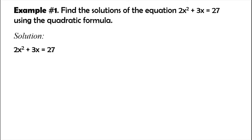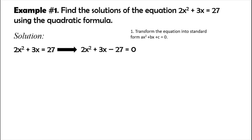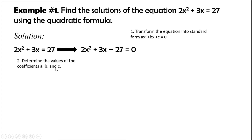Since example 1 is not yet in standard form, we transform it first. We transpose 27 to the left side of the equation, giving us 2x squared plus 3x minus 27 equals 0. Next step: determine the values of the coefficients a, b, and c. From the standard form, a is 2, b is 3, and c is negative 27.